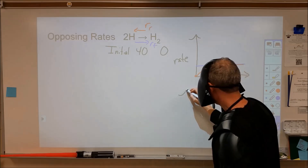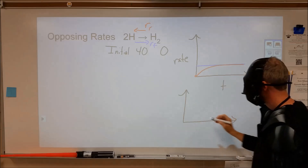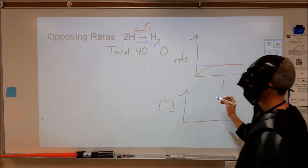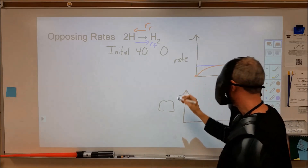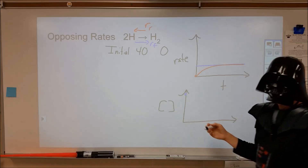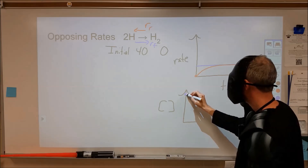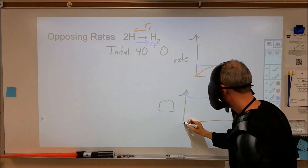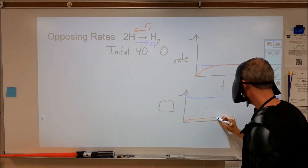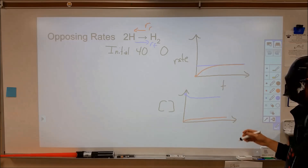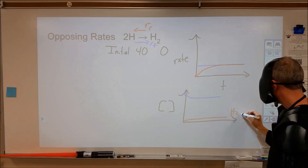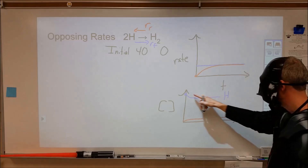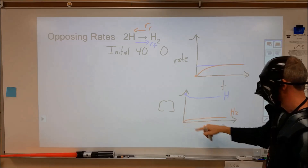If we look at concentration versus time, starting with H's as blue, we start with 40 of them. Over time, we gradually turn a couple into H2s, but the person breaking apart the H2s does so much faster. So we find very little H2 and a lot of H's over time. Additionally, we decrease by twice the amount as we increase, following the stoichiometry.